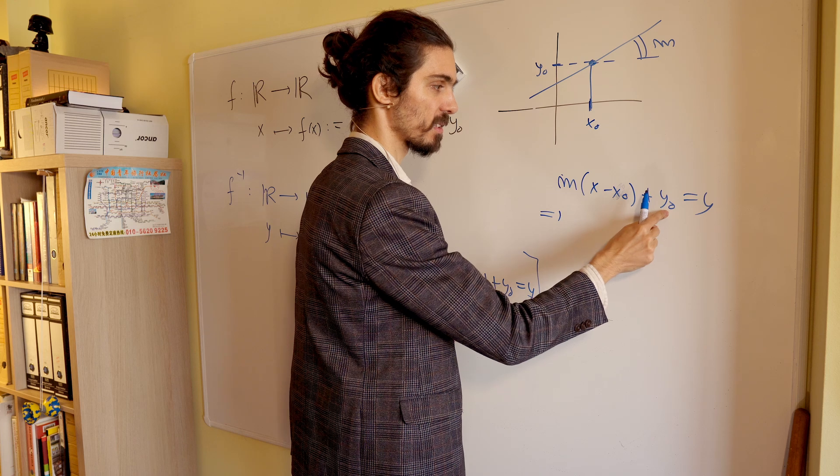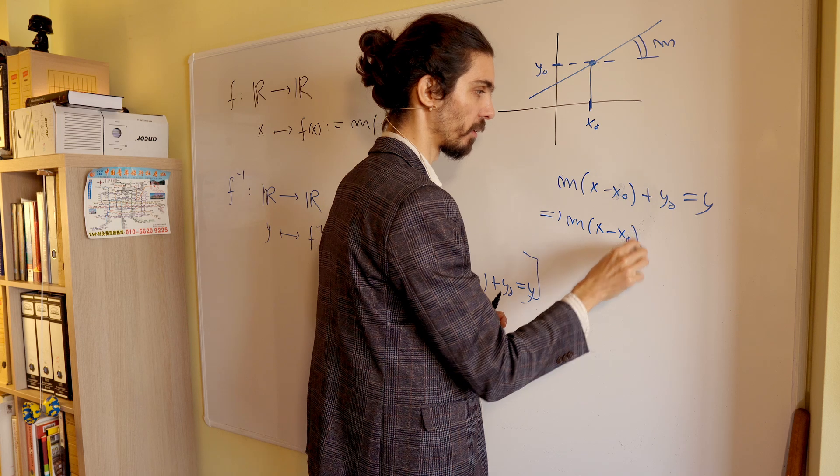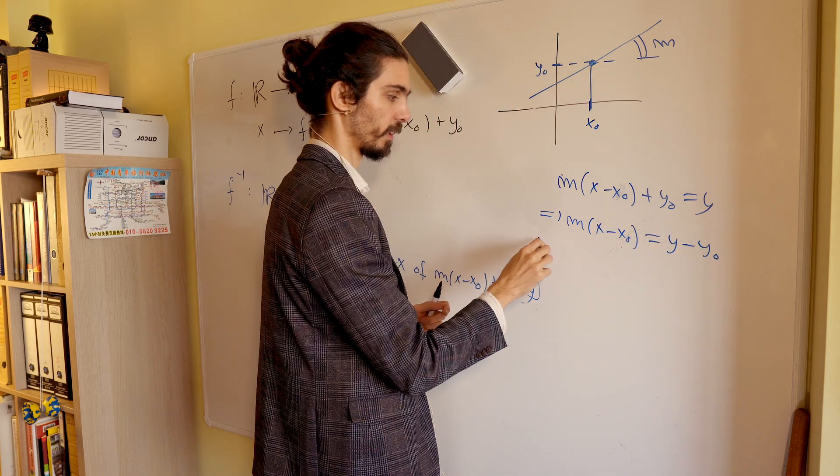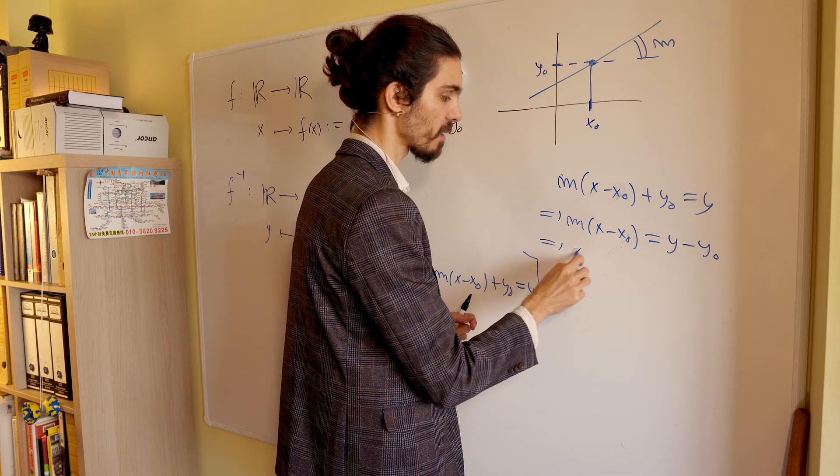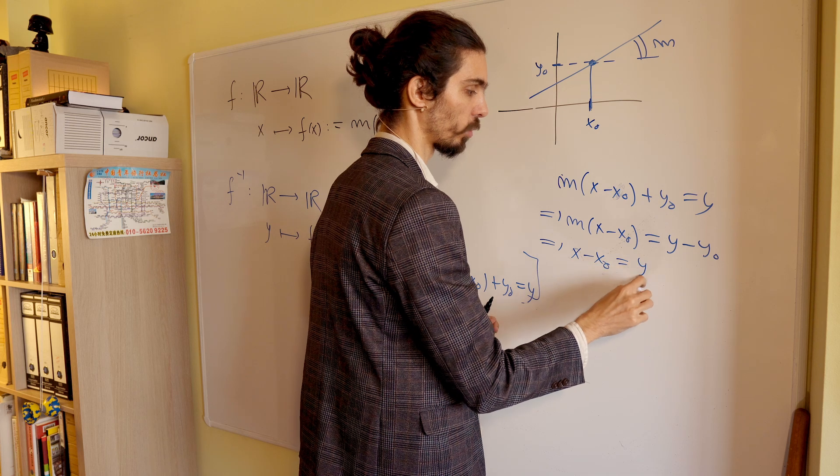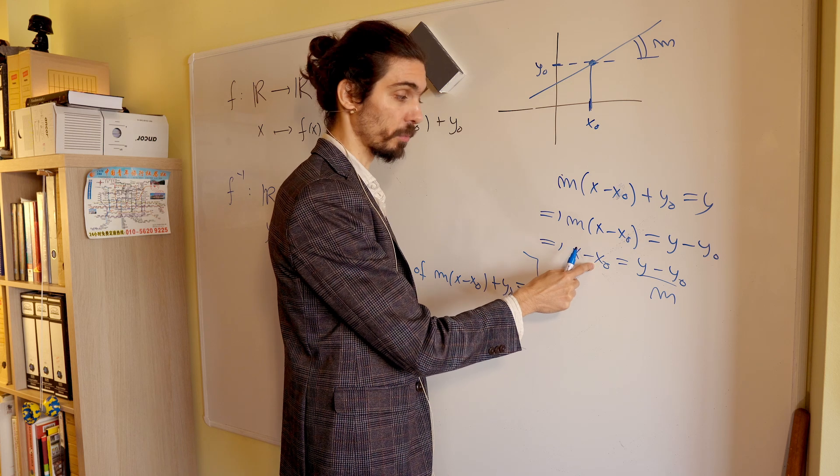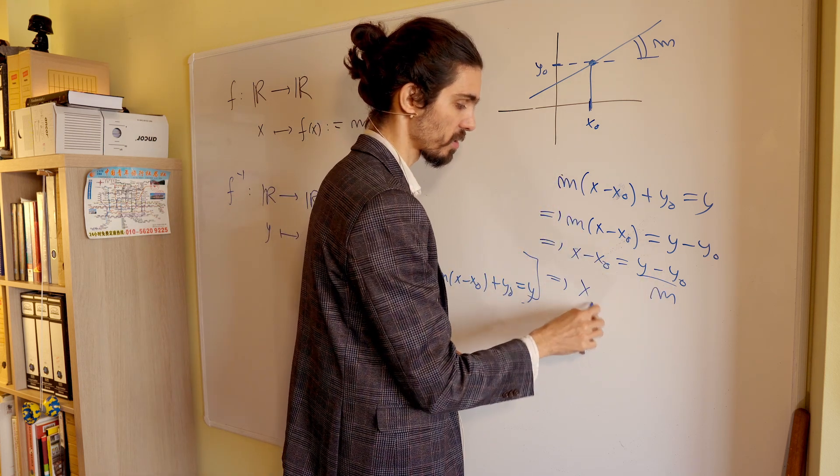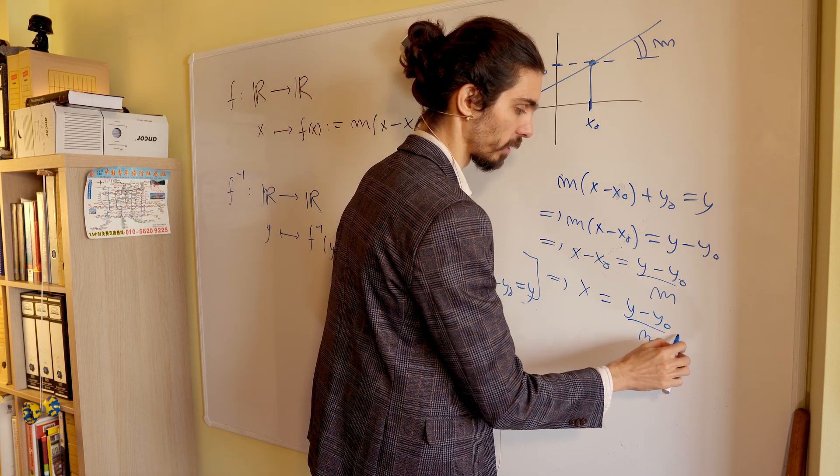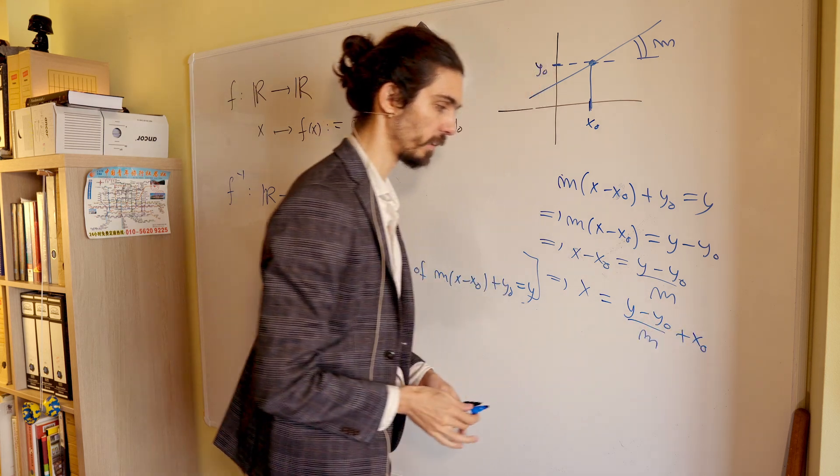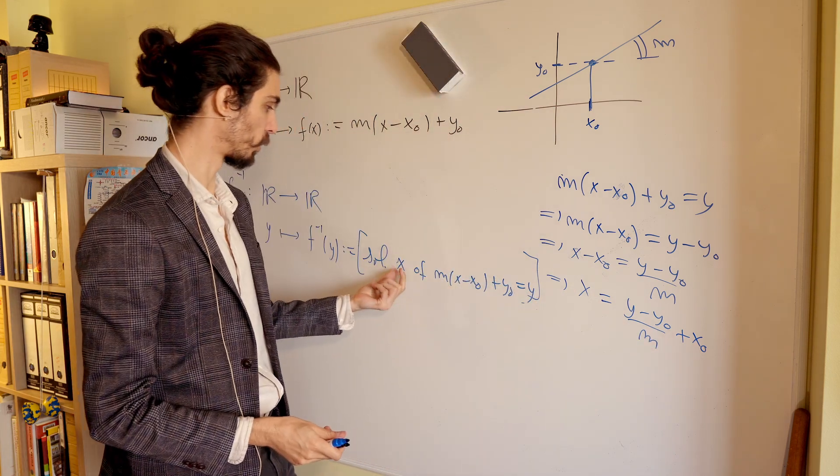So, let's undo the first step. Well, it says it adds x0, let's subtract. x minus x0 is equal to y minus y0. So, then you divide by m on both sides. The m's here cancel. You get x minus x0 is equal to y minus y0 divided by m. And finally, the last thing to undo is the subtraction. So, we add x0 to both sides. And we finally have the x isolated on one side here.